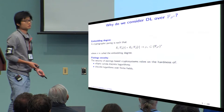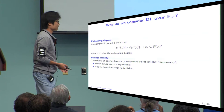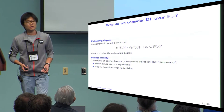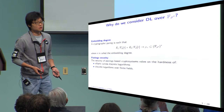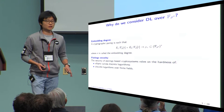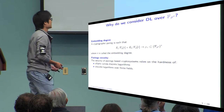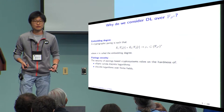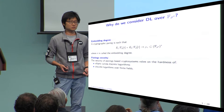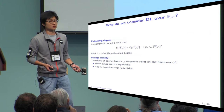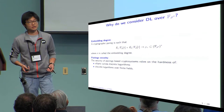Why do we consider DLP over finite field over large characteristic? Because it is important in pairing-based cryptography. Usually, a cryptographic pairing has a form that maps from two elliptic groups defined over a prime field, to a finite field of extension degree N. We say this extension degree as the embedding degree. The security of pairing-based cryptography relies on the hardness of the DLP over these two elliptic groups and the DLP over the finite field F_{P^N}.